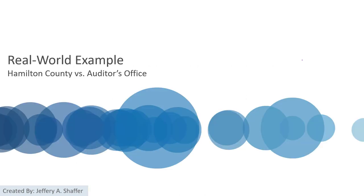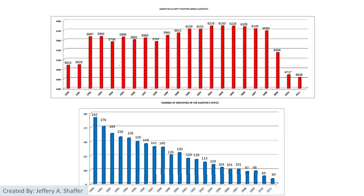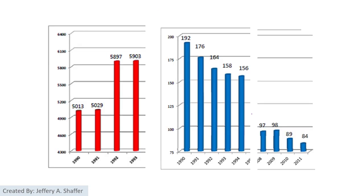Now let's see another story where we want to compare the number of employees in different offices — Hamilton County and the Auditor's Office. This bar chart shows the number of employees in both offices over different years. We can immediately notice some designing issues: they didn't start from zero, they are using 3D effects, and they labeled each single marker, which is really not necessary.